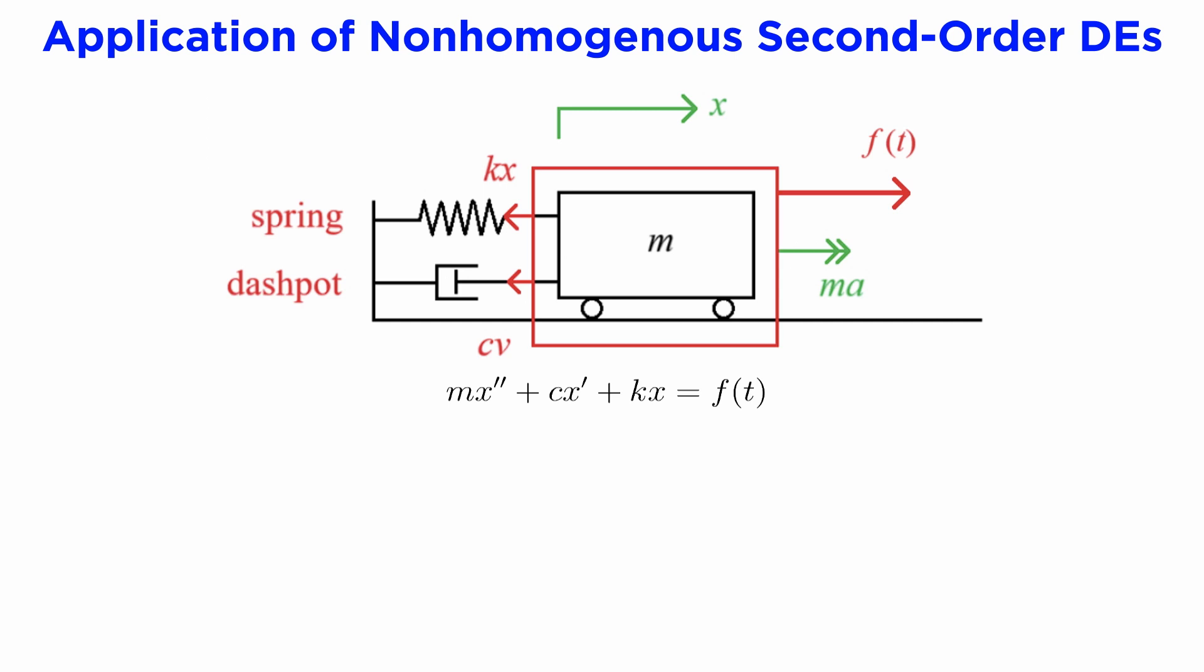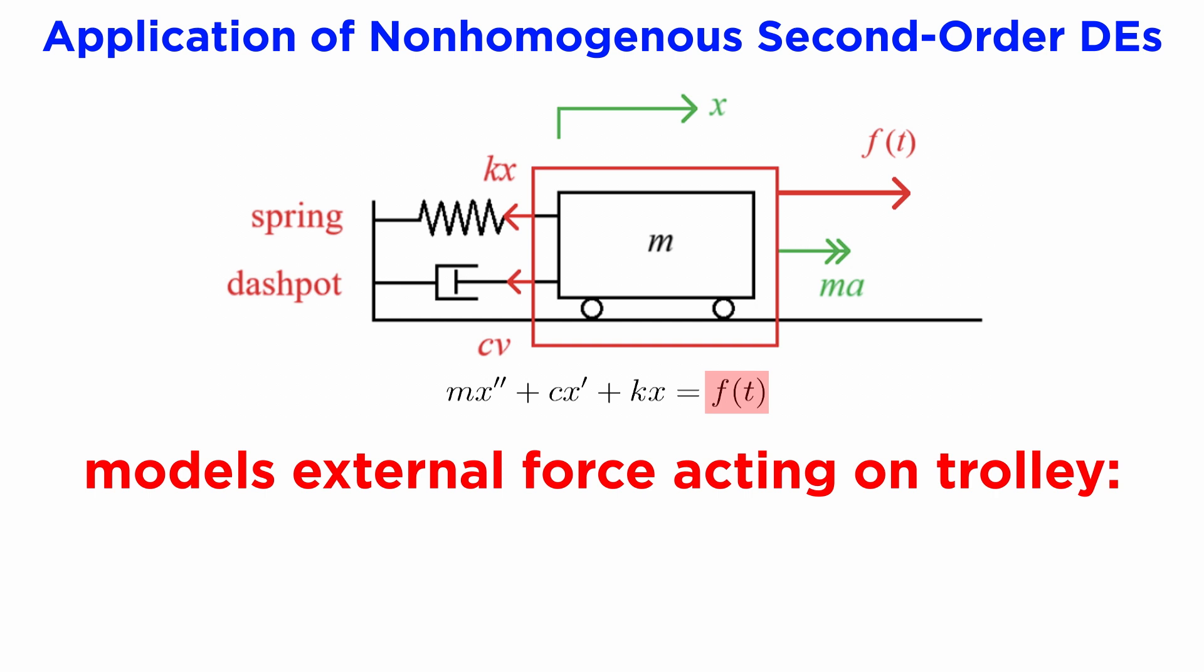Lastly, let's see an application for non-homogeneous second-order DEs. Whereas the homogeneous case can model free mechanical vibrations, the presence of that right-side term can act as a forcing function, and so we can now model forced mechanical vibrations. If we return to our free body diagram of a mass-spring-dashpot system that we saw in the last tutorial, and add a time-varying body force f(t), then the resulting equation of motion will have f(t) on the right side, like this. This can model an external force acting on the trolley, such as gusts of wind, impacts, or even gravity pulling it down an incline.